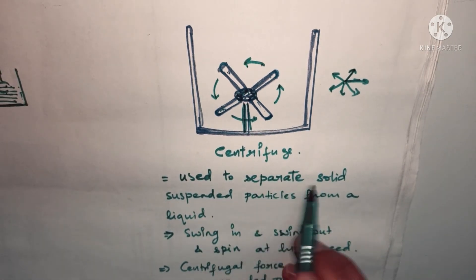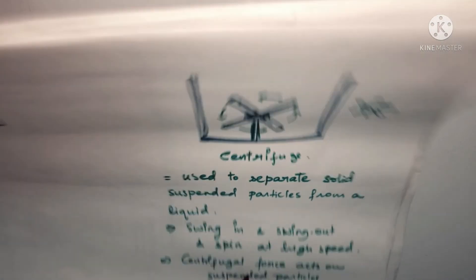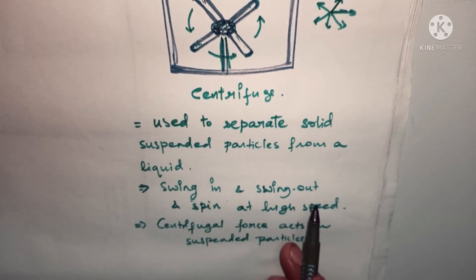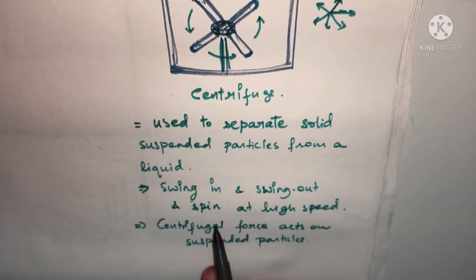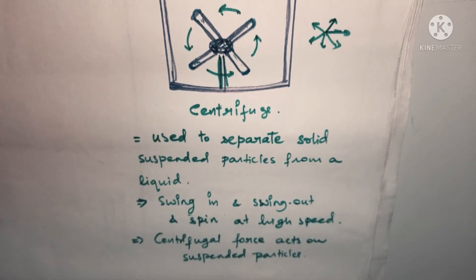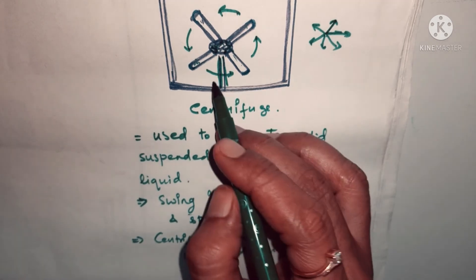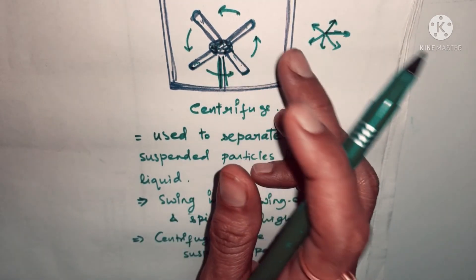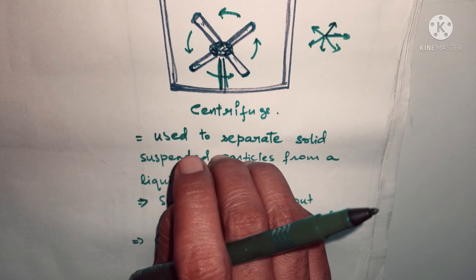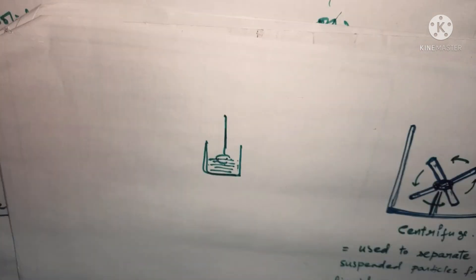In short, the centrifuge machine is used to separate solid suspended particles from a liquid. It swings in and out, spins at very high speed, and centrifugal force acts on the suspended particles. The heavier particles go down to the bottom, and the lighter particles like fat and cream remain at the top surface. This is how we separate fat from milk.